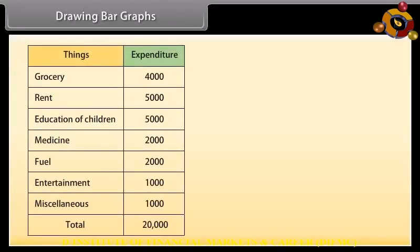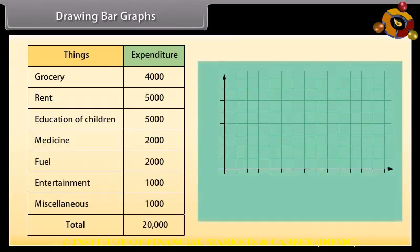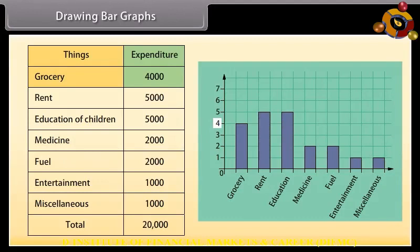Drawing bar graphs: Look at this table showing the expenditure of a family with a monthly income of 20,000. To draw the bar graph, we use the items on the horizontal axis and expenditure on the vertical axis. Mark the items and expenditure on both axes — here one means one thousand, two means two thousand. To represent grocery, we make a bar of unit 4, and similarly other items are represented, leaving a gap of one unit between two consecutive bars.